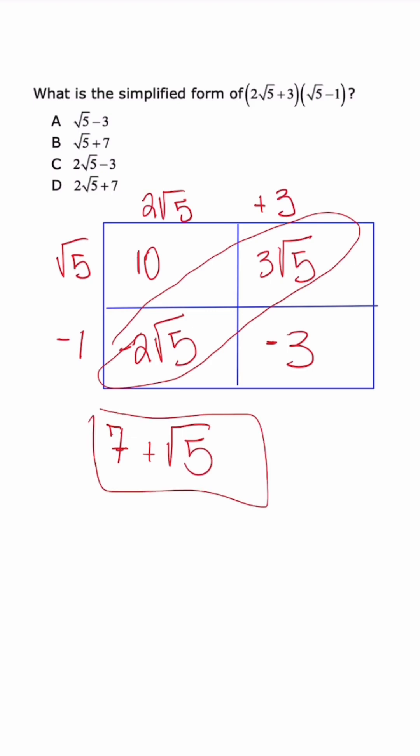So when we look at our answer choices, this is going to be answer choice B. This is the same expression, they just wrote it with the radical first. So if you struggle with foiling radicals or just foiling in general, please use the box method. We have a video link down below to help you with it if you need.